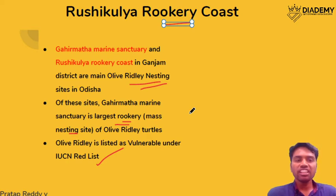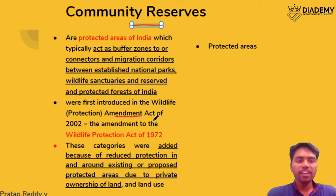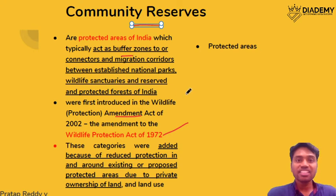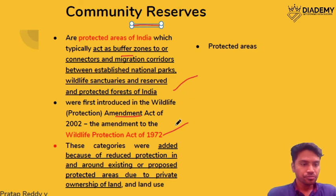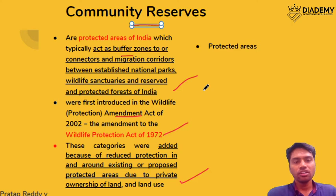Community reserves have their origin in the amended Wildlife Protection Act. These are buffer zones connecting different corridors between national parks and wildlife sanctuaries. These categories were added because there was increased reduction of protected areas, and to promote conservation of particular species and to conserve the biodiversity of particular areas.